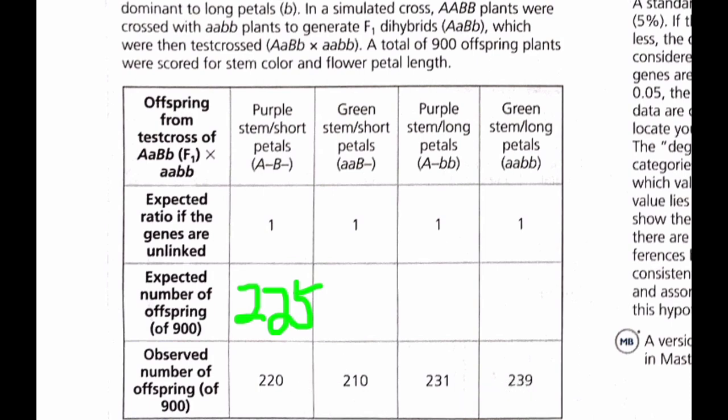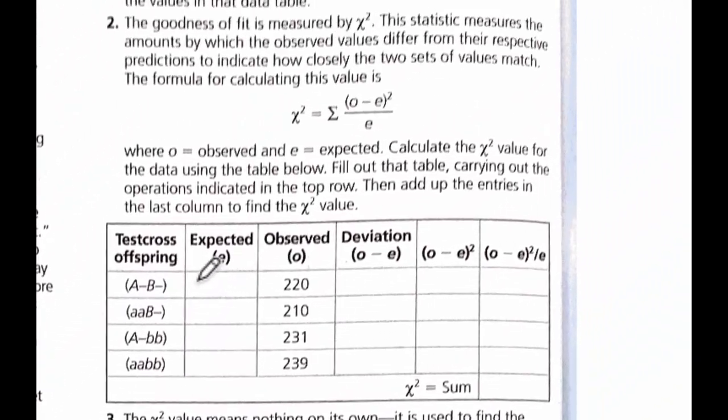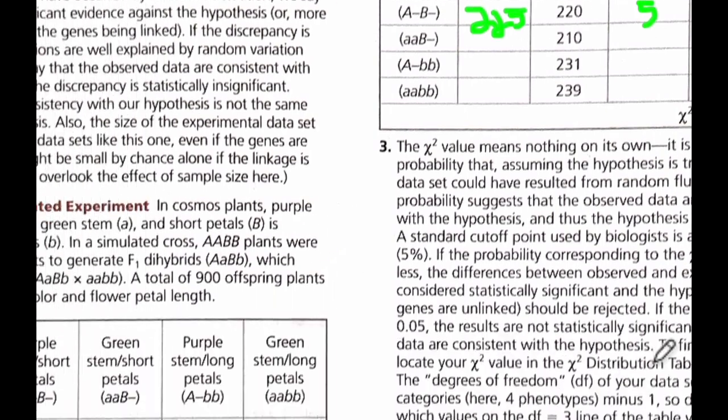Now here are the observed. They got 220, 210, 231, 239. Question is, is this close enough or is it significantly different than the expected? So if the genes are on different chromosomes, these are the values we'd expect. If the genes are on the same chromosome, then it would deviate from that. And the chi-square will tell us the answer to that. So we do a chi-square. You put in the expected. That's 225 for each of those outcomes. And you would fill 225 in repetitively down the list. And then you're going to do your observed minus expected. So 220 minus 225. That's a difference of 5. And then 5 squared is 25. And then you take the 25 divided by the expected of 225. And you fill in that value here.